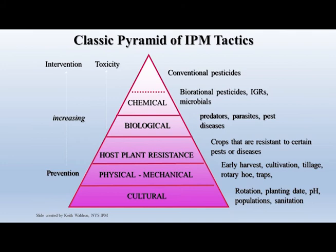Chemical control comes in two types: bio-rationals and conventional. Bio-rationals are more specific to a certain pest and have less impact on the environment — these include BT spray for certain moth pests or beetles, insect growth regulators, and microbials. If a bio-rational is not available, you would use a conventional pesticide if you're not in an organic situation.